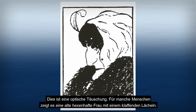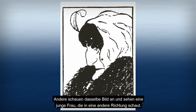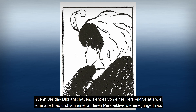This is an optical illusion picture. It looks like to some people an old woman — a haggish looking old woman with a big gaping smile. And to others, they look at the same picture and they see a very young woman looking off in a different direction. So when you look at the picture, in one perspective it looks like an old woman, and in another perspective it looks like a young woman.